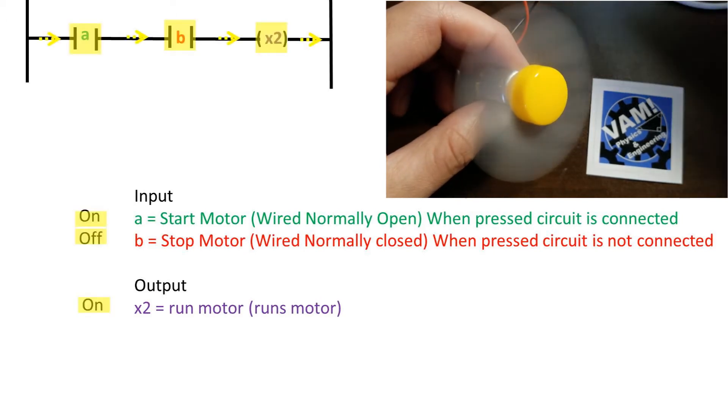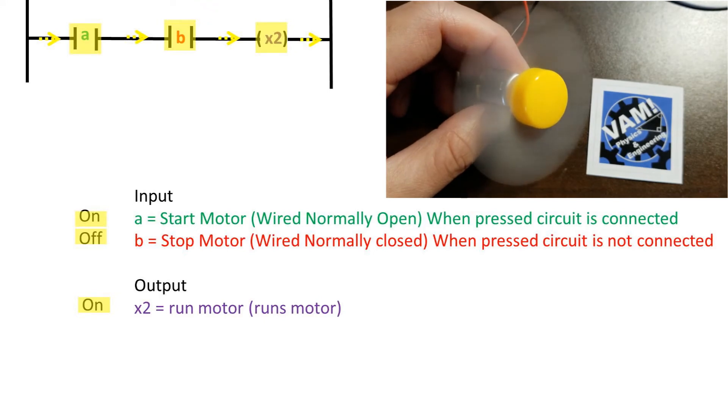Now let's take a look at what happens when we press the start motor button, A. The motor starts running. Notice that the stop motor button is powered on by default. We will be representing a closed contact by a yellow box around the contact, and the flow of electricity by yellow arrows.